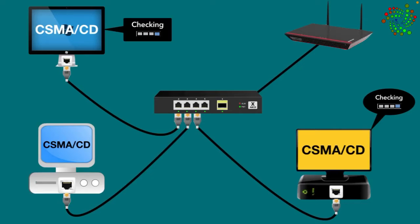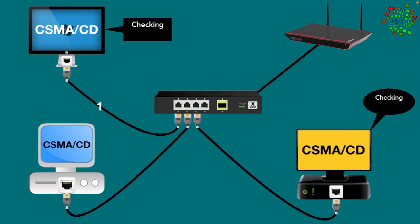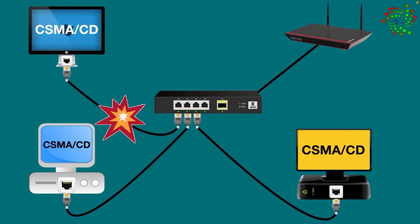If it finds no traffic, then it sends out the first bit of data to see if a collision happens. If the first bit goes through successfully, then it sends out the other bits while still checking for collision. If a collision occurs, then it waits for a short period of time and starts the process all over again until the full transmission is completed.